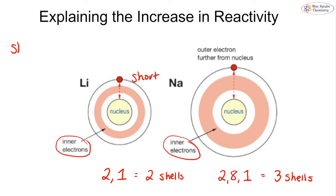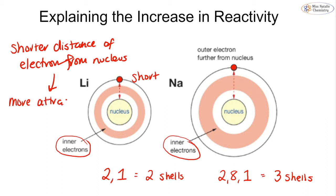The shorter the distance of the electron from the nucleus, the more attracted it is. So if the electron is more attracted to the nucleus, it is held more tightly. So it means that the lithium likes to hold on to that one outer electron.